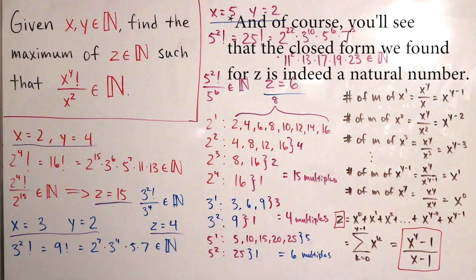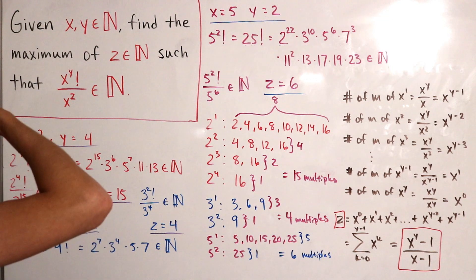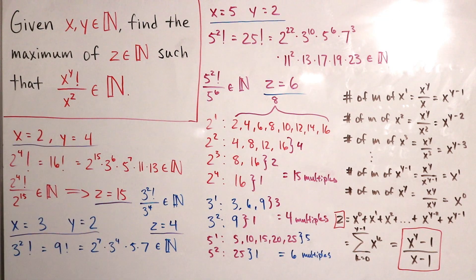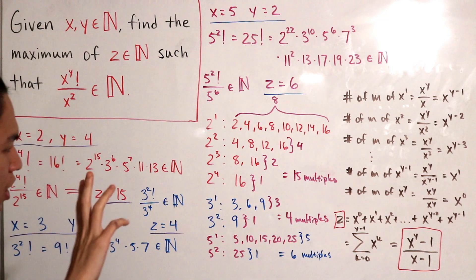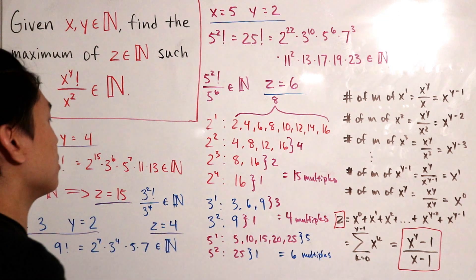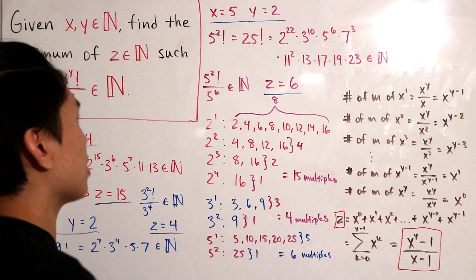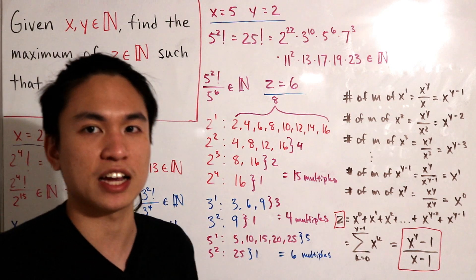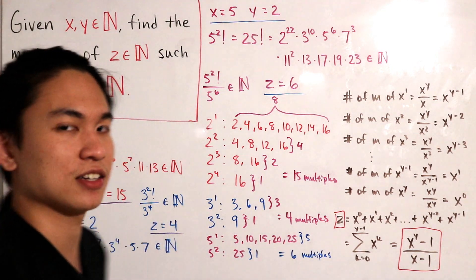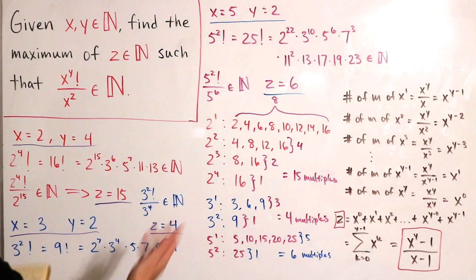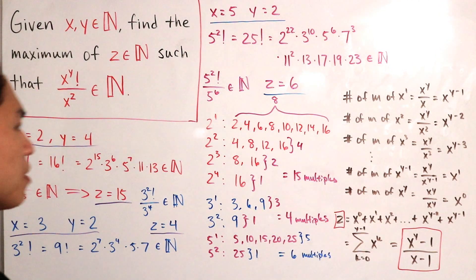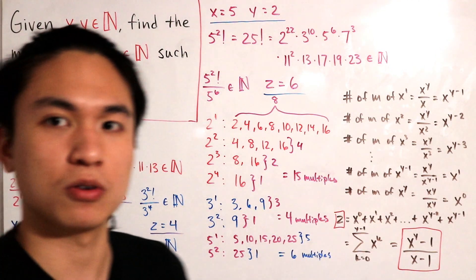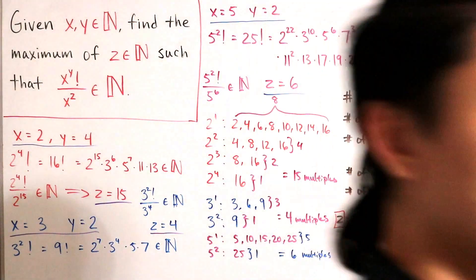And there we have it — a closed form for z. This is a really interesting result, especially if you're trying to solve problems using guess and check. This is a perfect example of how pattern recognition leads to a clean closed-form solution. Pretty cool!